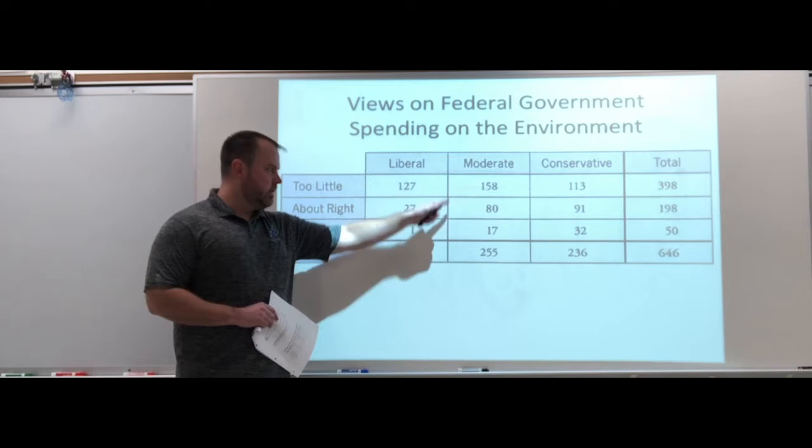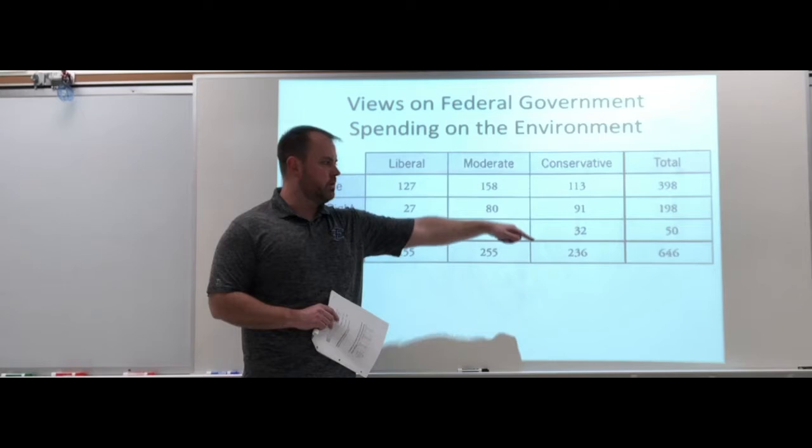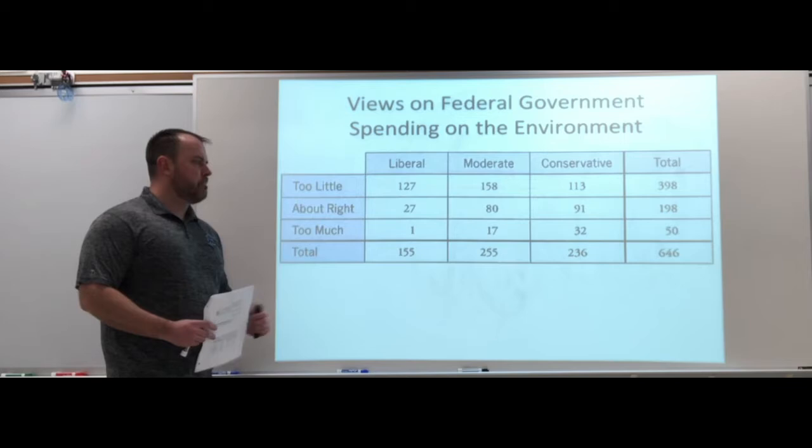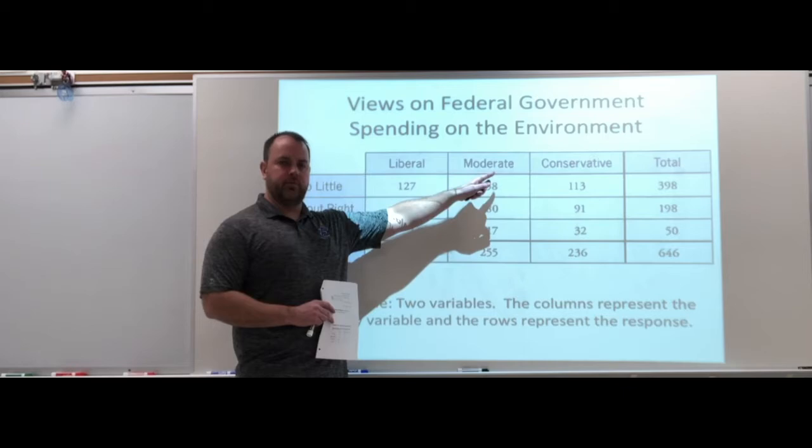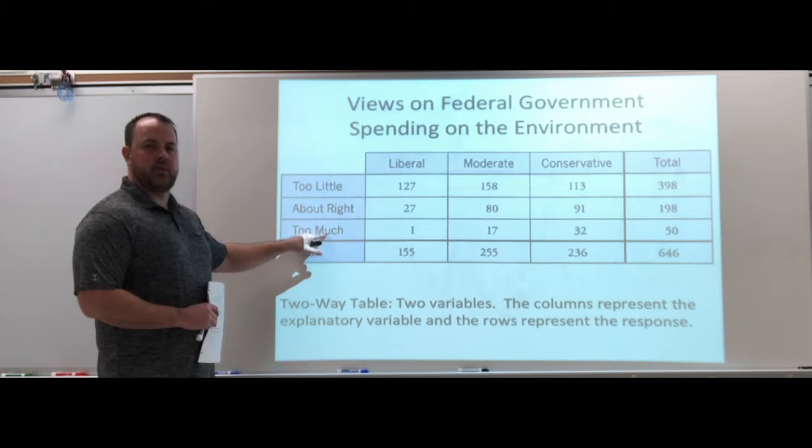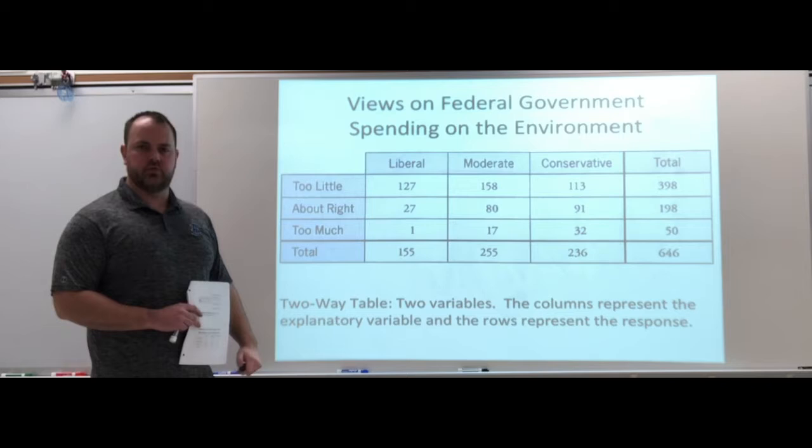We have our two variables. The counts are inside - these aren't percentages, these are counts. Totals going down the bottom, going down the side, and a grand total of 646. The columns represent the explanatory variable, and the rows represent the response. We're thinking that your political viewpoint might have an effect on how you think we're spending on the environment.